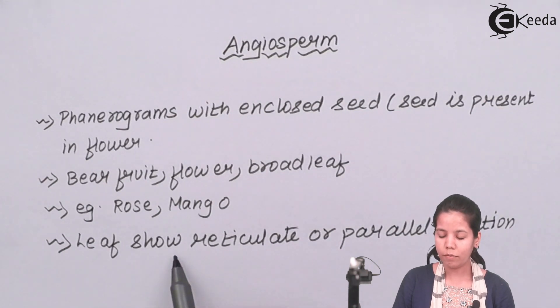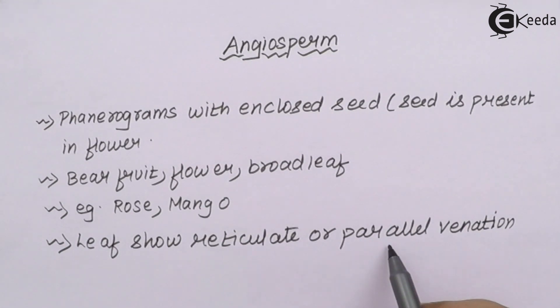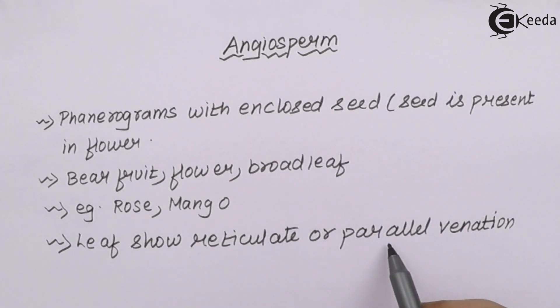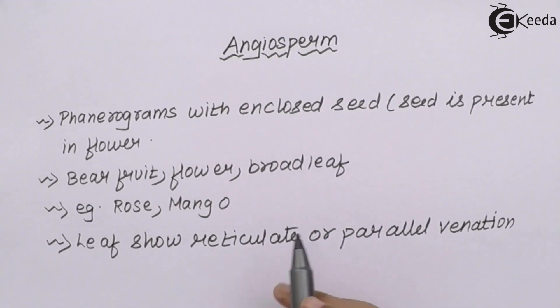Now the leaves show reticulate venation or parallel venation. Parallel venation is simple or plain venation, whereas reticulate venation is irregular venation.